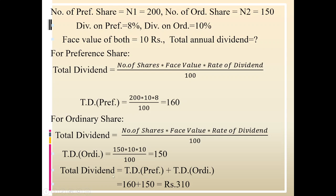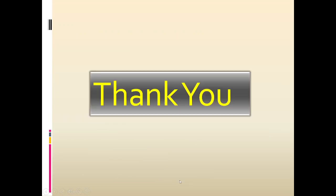Annual dividend = total dividend of preference shares + total dividend of ordinary shares = 160 + 150 = ₹310. Thank you.